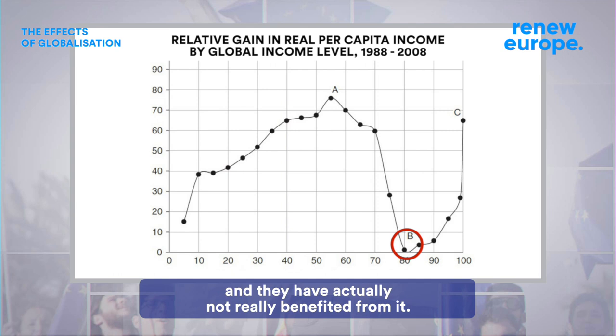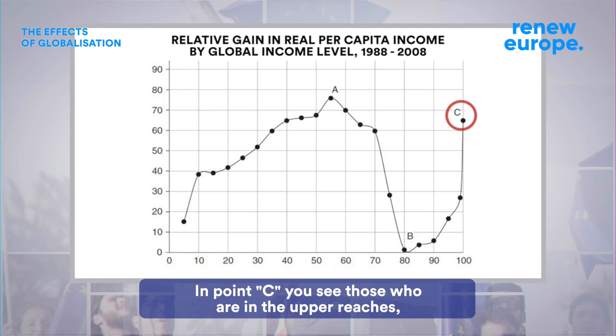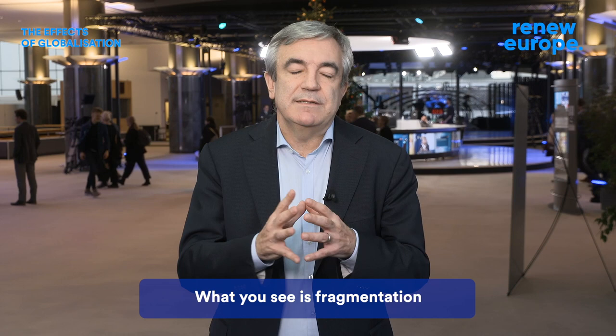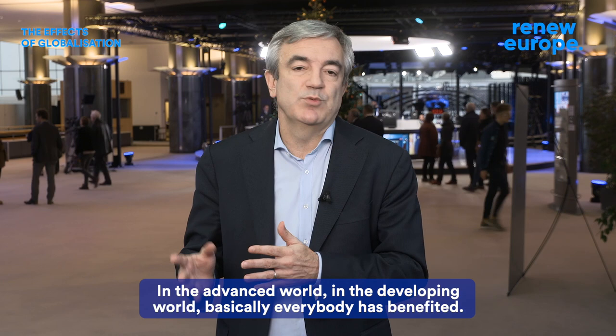At point C, you see those who are in the upper reaches — the professional classes — of the income distribution, who have really seen a big increase in income through globalization. What you see is fragmentation, because within the same country we see those who benefit and those who don't. In the advanced world there is division, while in the developing world basically everybody has benefited.